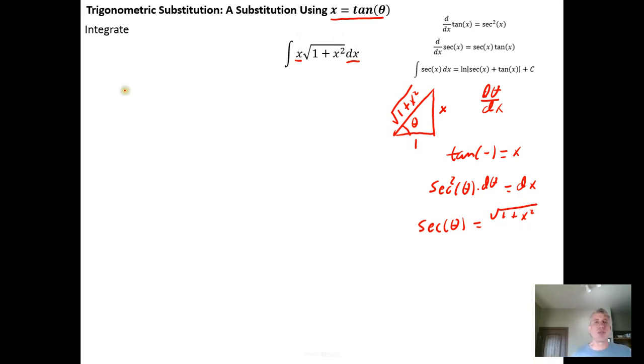So now we can go in and make some substitutions. We started with the antiderivative of x square root of 1 plus x squared dx. But the x can be replaced with the tangent of theta. Square root of 1 plus x squared can be replaced with secant of theta. And dx can be replaced with secant squared theta dθ. And so now we've converted our rectangular system into a trigonometric system.